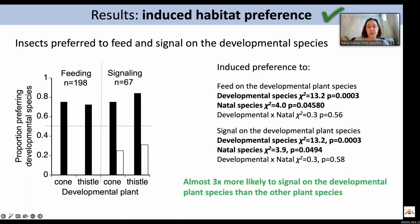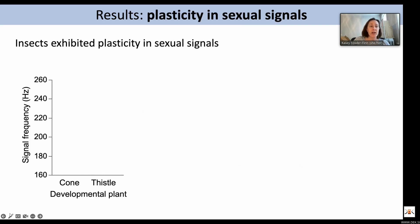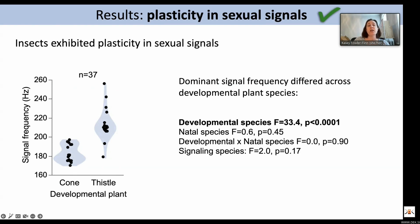We also found plasticity in sexual signals: there is a shift in dominant signal frequency across developmental plant species. Natal plant species had no effect, and the signaling plant species had no effect — the dominant signal frequency did not change whether individuals were recorded on coneflower or thistle. We are currently investigating whether plant transmission properties are driving this pattern.